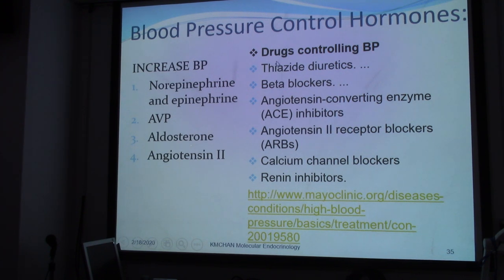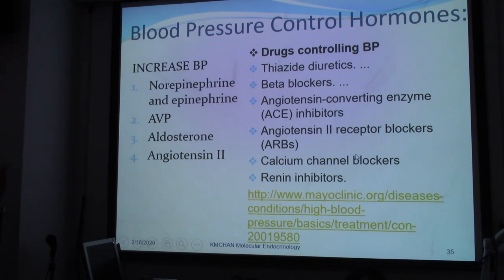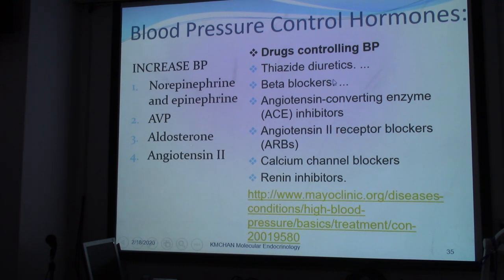Therefore, scientists and pharmacists are trying to identify different drugs to control blood pressure, including renin inhibitors, calcium channel blockers to stop calcium from entering endothelial cells, angiotensin 2 receptor blockers, and thiazide diuretics. These drugs inhibit the aforementioned systems to control or reduce blood pressure.